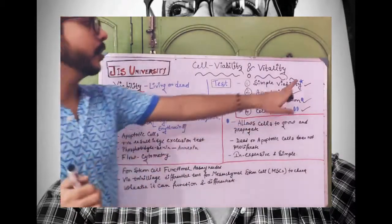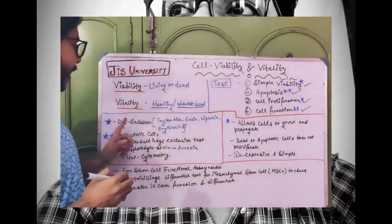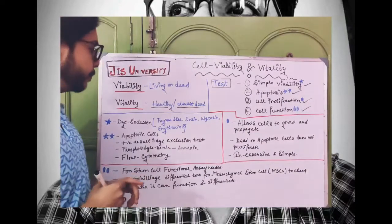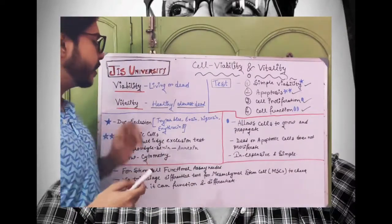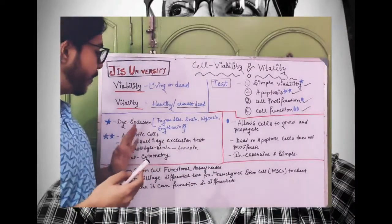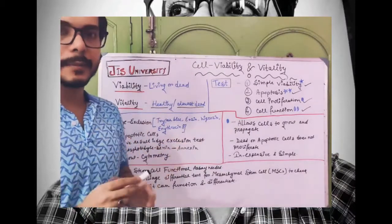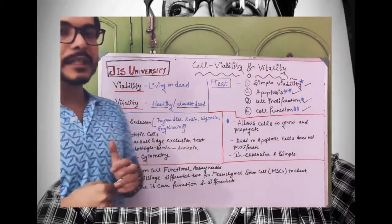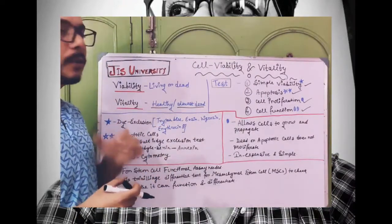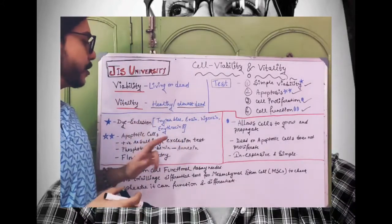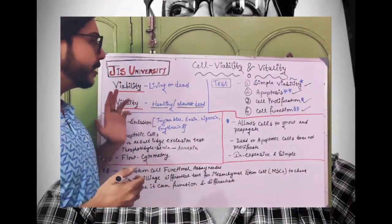The first test is the dye exclusion test. In simple viability, there are also dye take-up tests, but here I have discussed only the dye exclusion test. The details I will discuss in another video — today I am just giving a brief idea about all these tests. Different types of colored dyes are used, like trypan blue, which is blue in color, nigrosin, eosin, erythrosin — some of which are red in color. So this kind of dye can be used.